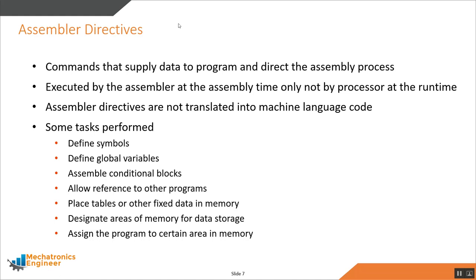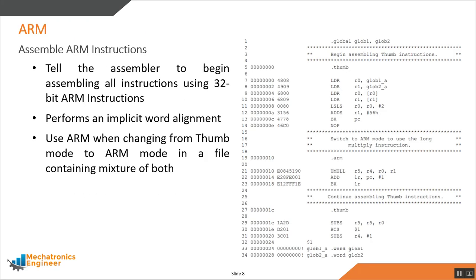The ARM assembler supports two modes of assembly language instructions: ARM mode and Thumb mode. ARM mode uses 32-bit instructions providing a comprehensive range of operations. The ARM assembler directive enables this mode and instructs the assembler to interpret subsequent instructions as 32-bit ARM instructions. If necessary, it also inserts up to three bytes of padding to align to the next word boundary.